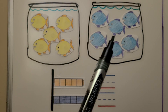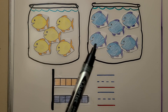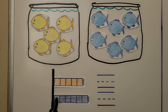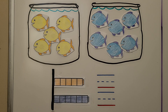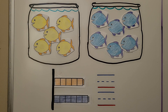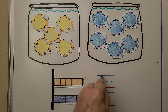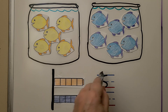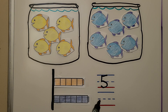And we have one, two, three, four, five, six fish in this bowl. We use one, two, three, four, five, six cubes in this cube train to model those fish. We can write the numbers. We have five and we have six.